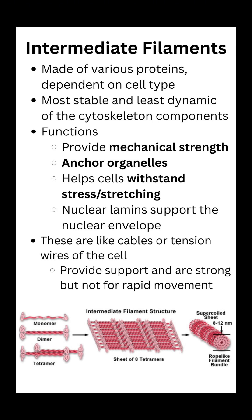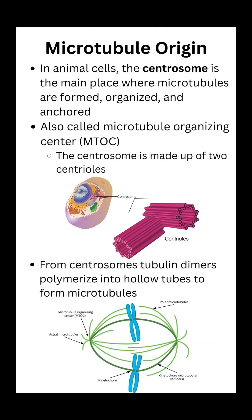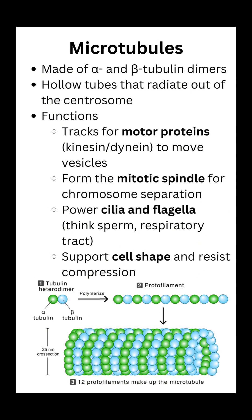Lastly, we have our microtubules, which are the thickest component of the cytoskeleton. They're made up of alpha tubulin and beta tubulin dimers that assemble into hollow tubes. In animal cells, they radiate outward from the centrosome, which is the microtubule organizing center. Microtubules form tracks for motor proteins like kinesin and dynein to transport materials, build the mitotic spindle for chromosome separation during cell division, and power cilia and flagella used for movement. They also support cell shape and resist compression.